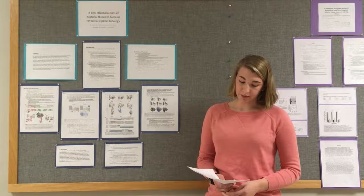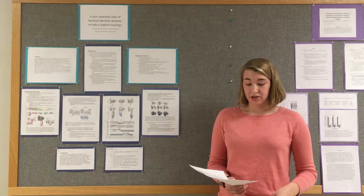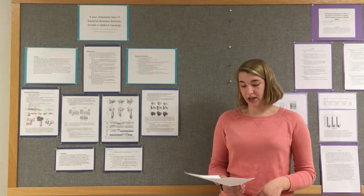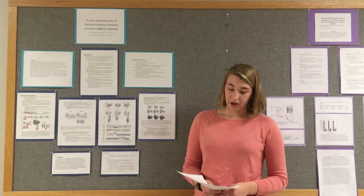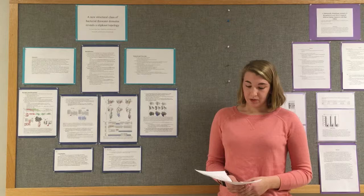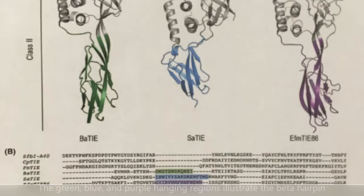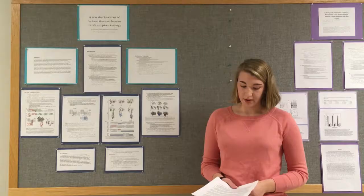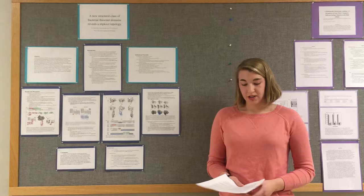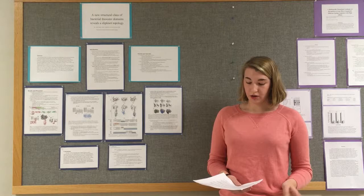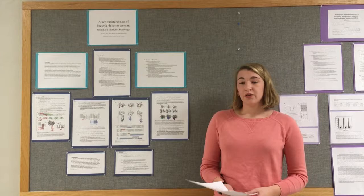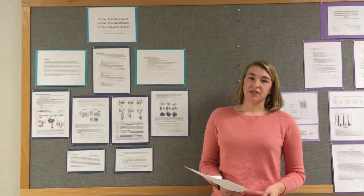Despite these differences, the thioester bond between the cysteine and glutamine residues is conserved in both classes of TEDs. But in class 2 TEDs only, the beta strands containing the residues involved in the thioester bond are extended to form a twisted beta hairpin that complements the beta barrel subdomain and forms the slipknot structure characteristic of class 2 TEDs. They speculate this structure plays a role in the stability of TED adhesion and likely has to undergo a conformational change when a covalent receptor is recognized. Both TED classes also conserve glutamine and tryptophan residues that create stabilizing hydrogen bonds with the cysteine involved in the thioester bond.